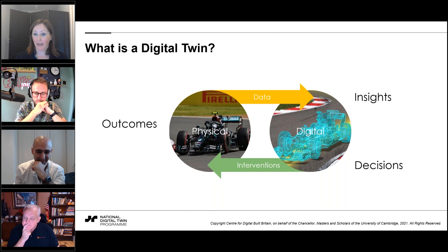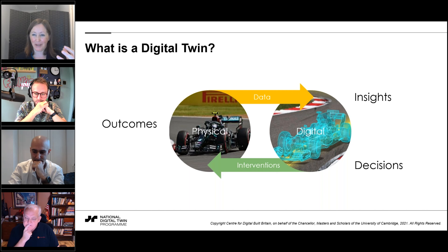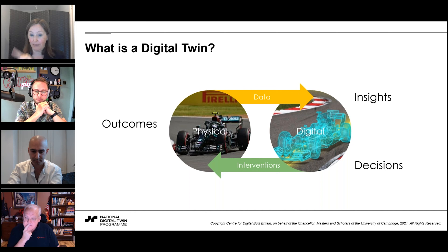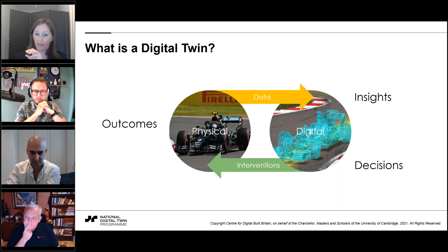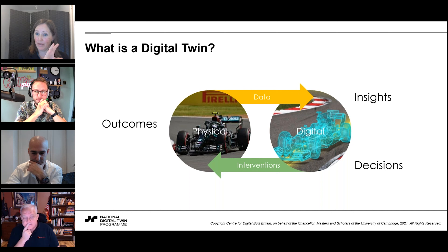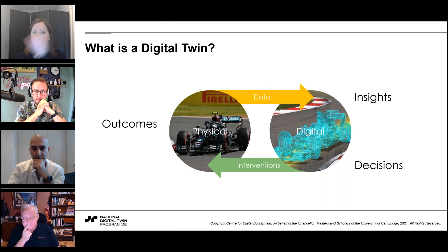To recap what we mean by a digital twin: you have the physical asset — they've been used a lot in Formula One, who were kind of the first. Data comes from the physical asset into the digital model. But what makes it a digital twin is the loop going back the other way with interventions: that data gives you insights, those insights inform decisions, and you therefore intervene better on the physical asset, giving you better outcomes. That loop is what makes it a digital twin, as opposed to just a 3D model.